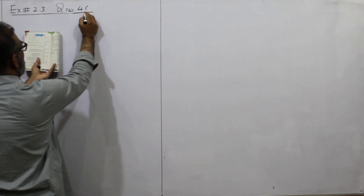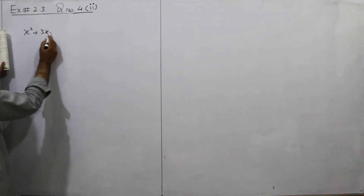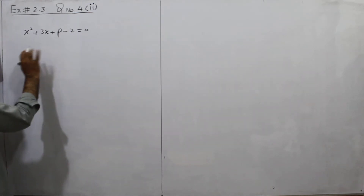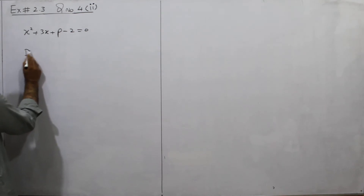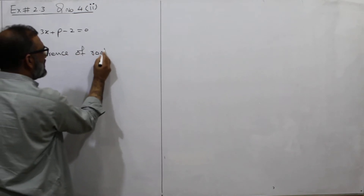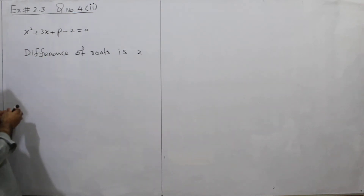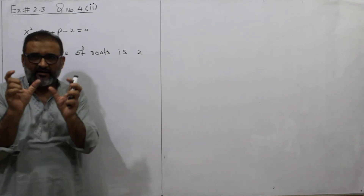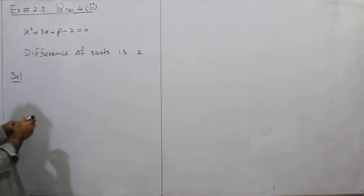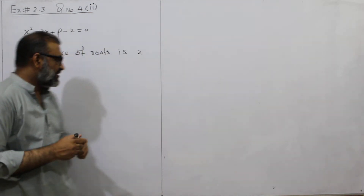It is part 2 — part 1 is easy. The question statement is: x squared plus 3x plus b minus 2 is equal to 0, and it says the difference of roots is 2. Now let's start it. How do we start? If you don't know the roots, call one alpha and one beta.